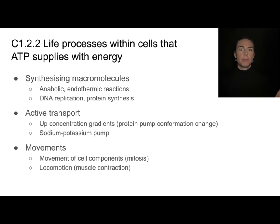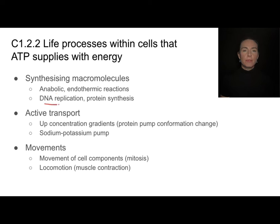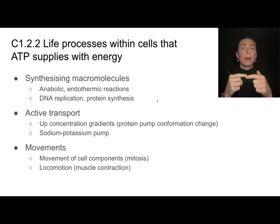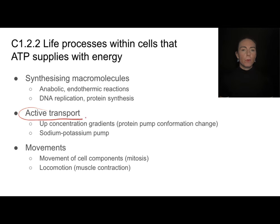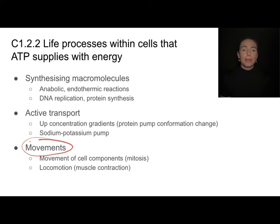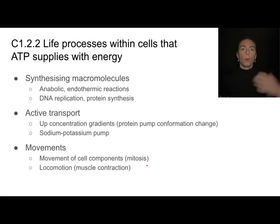Cells and organisms use ATP for a vast array of processes. They need it to synthesize macromolecules — all of those anabolic, endothermic reactions where we're building things like nucleotides into DNA or proteins. ATP is also needed for active transport, like the sodium-potassium pump moving things against the concentration gradient, and for movement — whether that's moving chromosomes during mitosis or muscle contractions during locomotion.